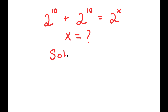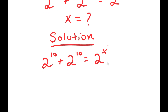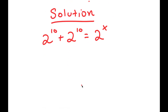For my solution, I'm going to first start by rewriting my equation. My equation is 2 to the power of 10 plus 2 to the power of 10 is equal to 2 to the power of x. To solve this, I'm going to first factor out 2 to the power of 10 from my left-hand side.